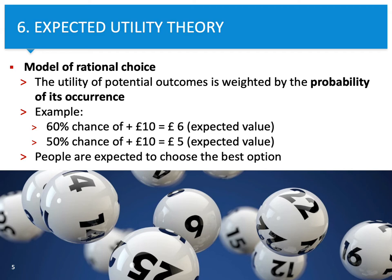Let's consider another example. This example describes a model of rational choice. In this case, we are going to weight each outcome with specific probabilities. Let's consider winning a 10 pound coupon in a lottery. If we know that a chance to win it is 60%, then we can simply calculate — the expected value would be 6 pounds. If the probability of winning is 50%, then the expected would be 5 pounds. When people know probabilities, they will probably prefer the first one because the expected utility is substantially higher. Most people will select the first lottery.